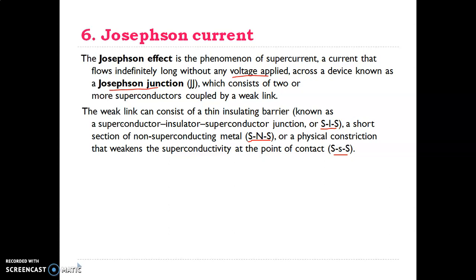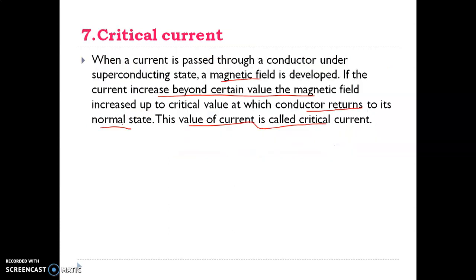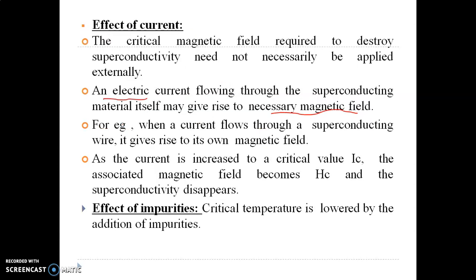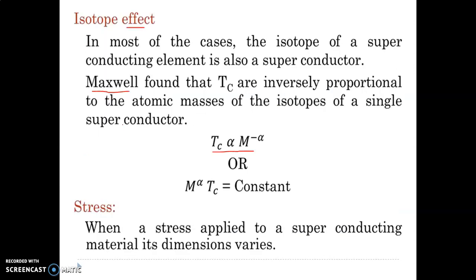The Josephson current flows through the conductor. The critical current is the current passing through the conductor in the superconducting state at a particular temperature; when the current produces a magnetic field reaching the critical value, superconductivity is destroyed. Regarding impurity — the addition of impurity lowers the critical temperature. Regarding the isotope effect — Maxwell found that the transition temperature is inversely proportional to the atomic mass of the isotope.